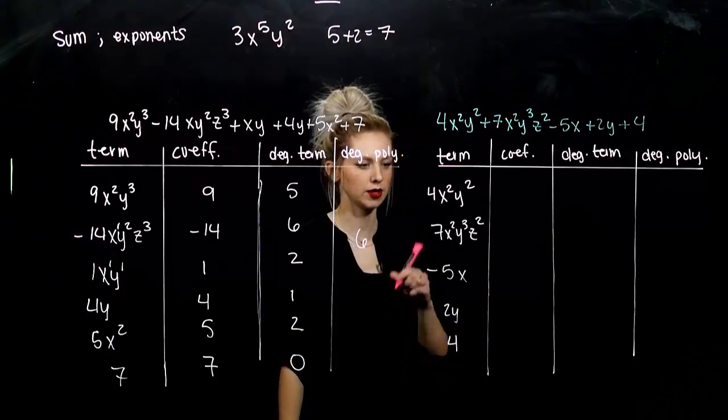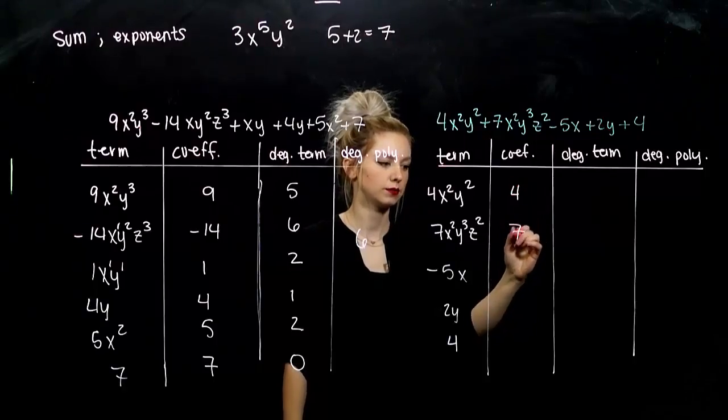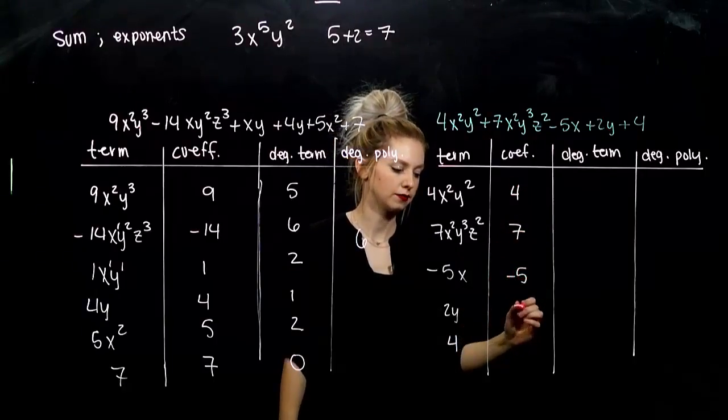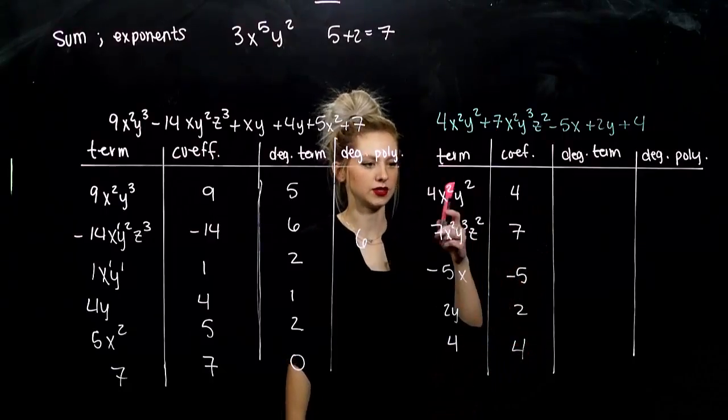Coefficient on the front of each of these. First one, what are we looking at? 4. Second one, 7. Negative 5. 2. 4.